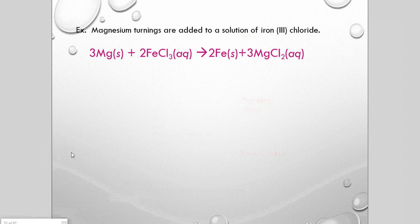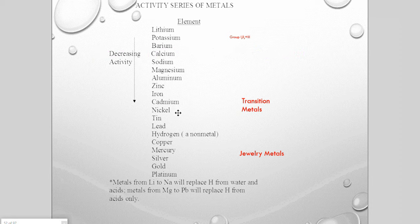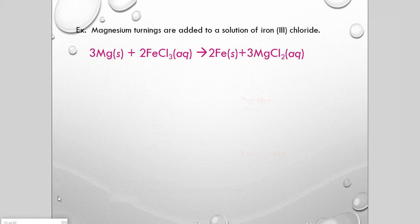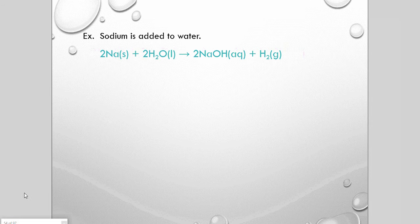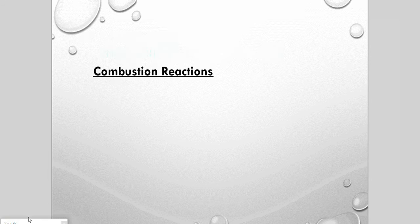Magnesium turnings added to a solution of iron(III) chloride is a single replacement reaction. We check the activity series: magnesium has greater activity than iron, so replacement occurs — metallic iron is freed and a magnesium chloride solution forms. Another type of single replacement: water reacting with sodium metal. Sodium oxide initially forms, then reacts with water to make sodium hydroxide and excess hydrogen gas.